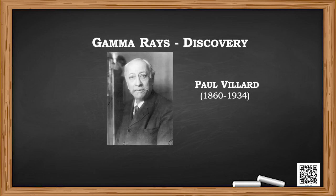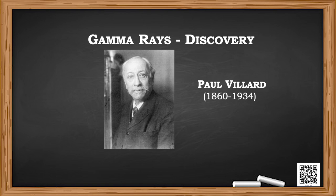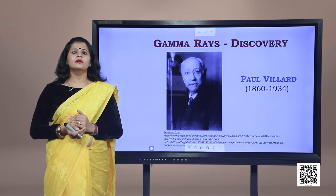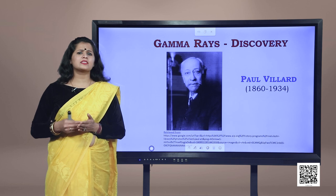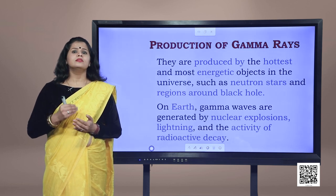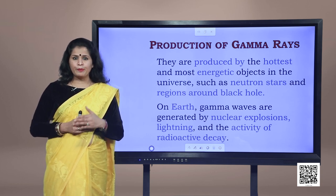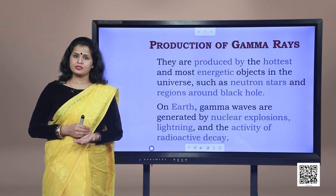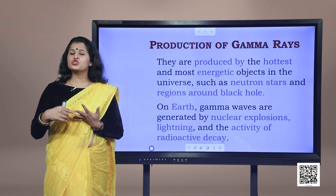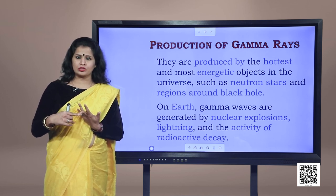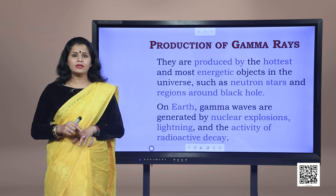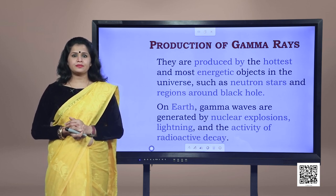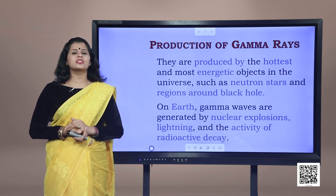We are now at the last part of the electromagnetic spectrum: gamma rays. These rays were discovered by Paul Villard in 1900 and were the third component of radioactivity after alpha and beta rays. Gamma rays are produced by the hottest and most energetic objects in the universe, such as neutron stars and pulsars, supernova explosions, and regions around black holes. On Earth, gamma rays are generated by nuclear explosions, lightning, and the activity of radioactive decay.